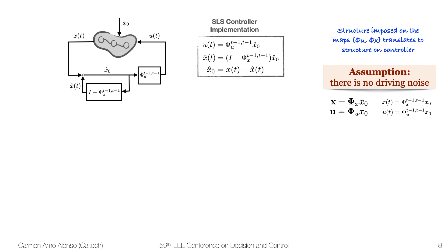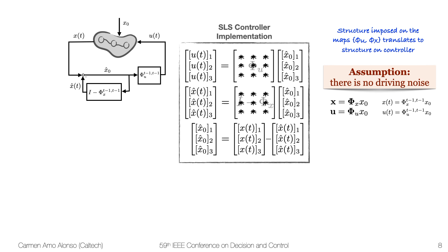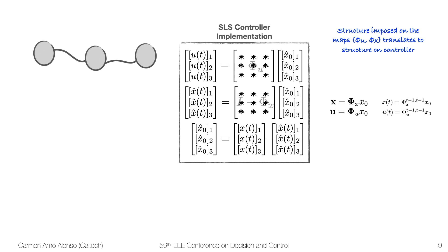Just to illustrate this further, let's focus on this three node network. This is what the implementation of the controller exactly looks like. We can go ahead and try to distribute this implementation across the subsystems. However, this will not be successful because we still need global communication across the subsystems.